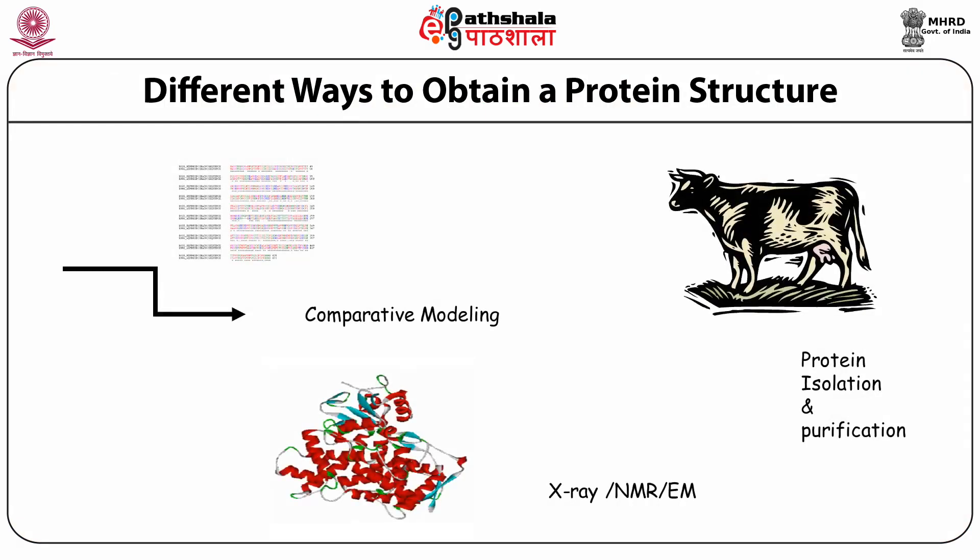Now there are different ways to obtain a protein structure. One could isolate a protein from an animal source, or more often nowadays after overproduction of the protein in some bacterial cell. Then we take out the protein and we experimentally determine the structure using either x-ray crystallography, NMR spectroscopy, or electron microscopy. This is the experimental route.